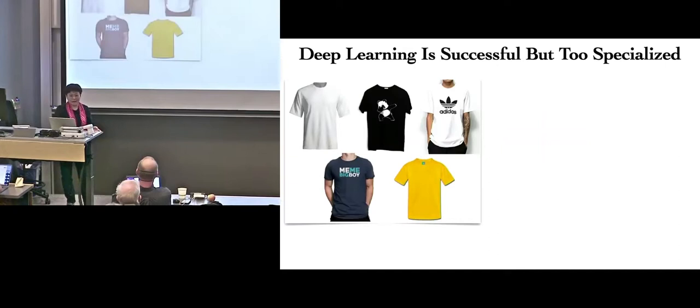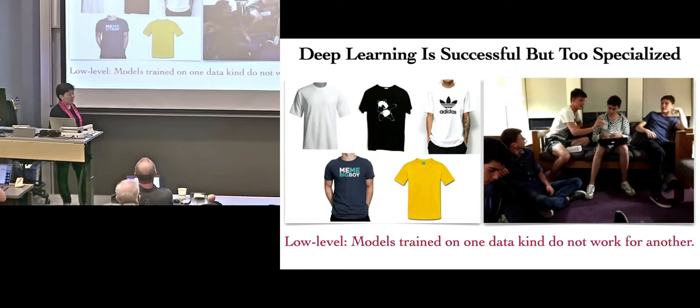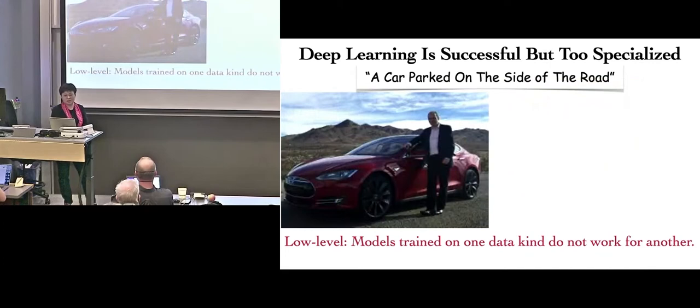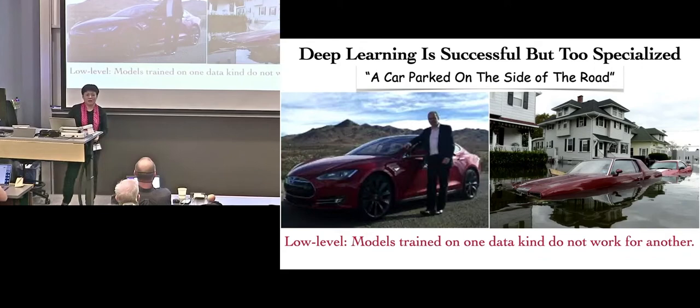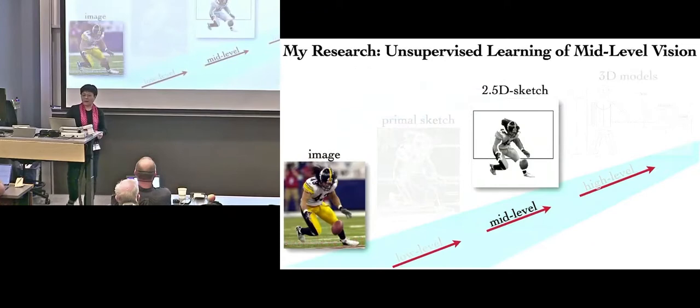Now, deep learning under the supervised learning scheme, where the model is told what you are supposed to see, has been very successful. But it's too specialized. Each task requires a different model, and there are many tasks available, and they can be conflicting each other. Models trained for one task do not work for another. And the model that's trained is also subject to the data it has been fed with.